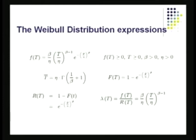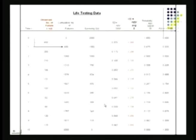The formulas for the Weibull distribution are shown — the density, the average times, the computed values of reliability, the mean time to failure distribution, and the rate of failure.